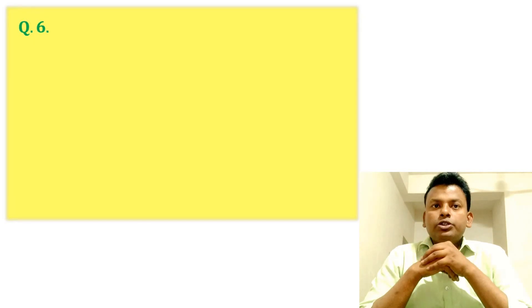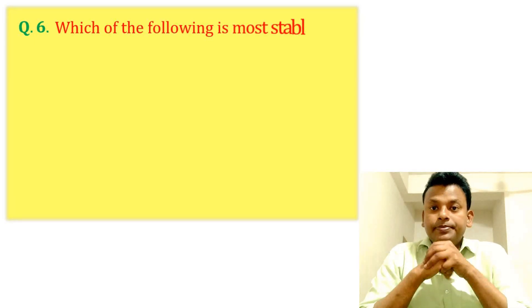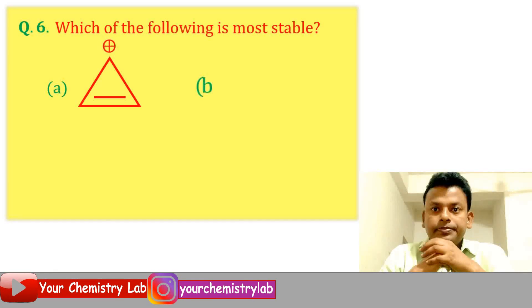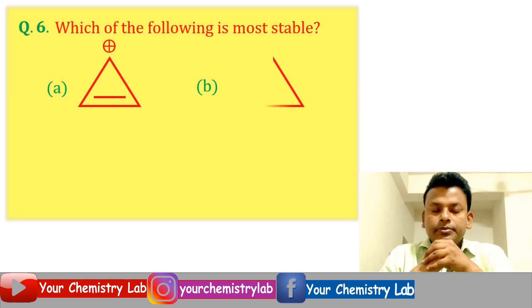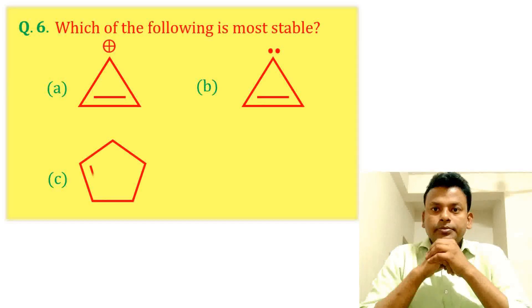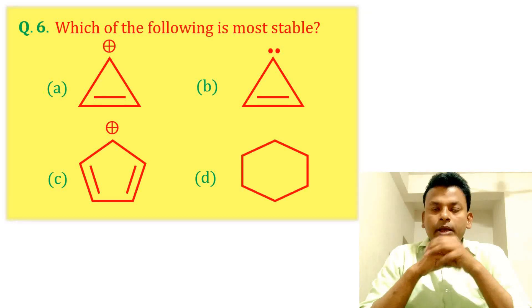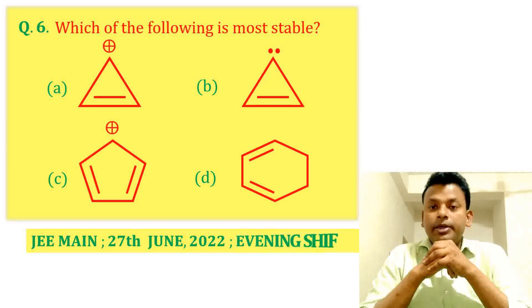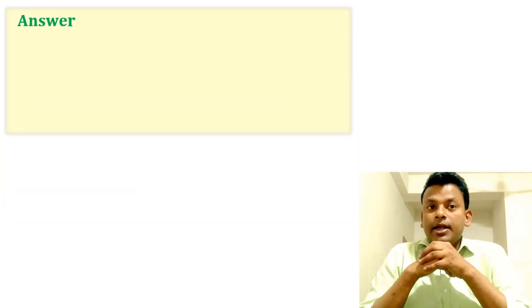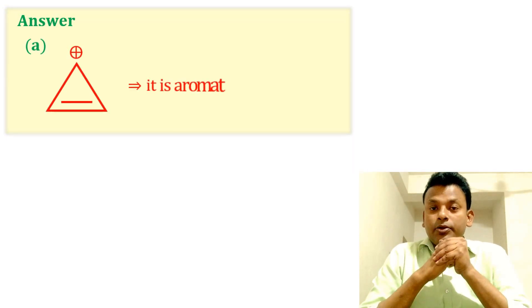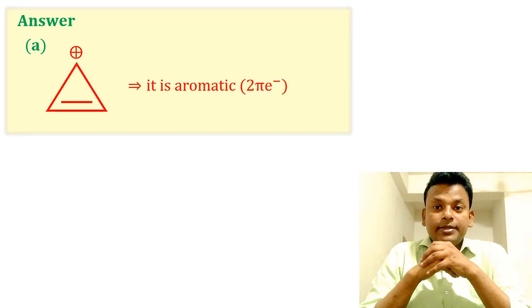Question 6: Which of the following is the most stable? This question was set in JEE Main 27th June 2022 Evening Shift. Answer: Option A is correct — it is aromatic with 2 pi electrons, so Option A is the correct answer.